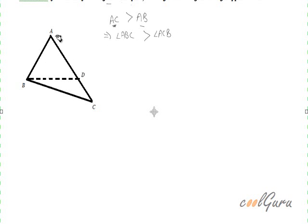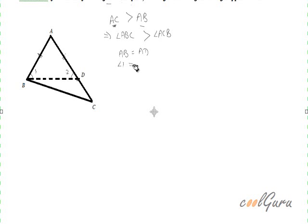For this, I have taken a point D on the side AC such that AB is equal to AD. If AB is equal to AD, then let this angle be angle 1, which is equal to angle 2. Because we know that angles opposite to equal sides are equal. Therefore, if AB is equal to AD, then angle 1 is equal to angle 2.